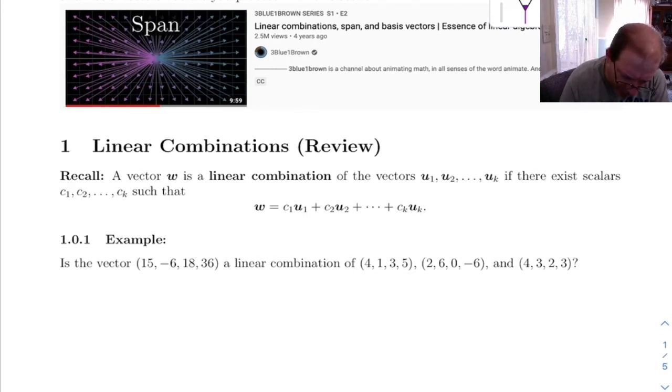Recall, a vector W is a linear combination of some other vectors if there are scalars so that you can write W as a scalar times U1 plus a scalar times U2 and so on. Let's do a couple of these examples.